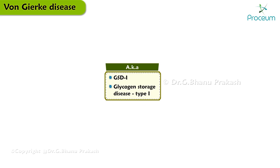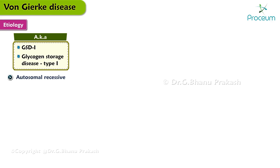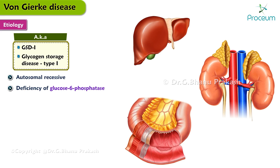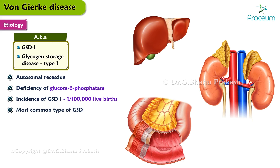Hello everyone, today we are going to be talking about Von Gierke disease, starting with the etiology. Von Gierke disease is an autosomal recessive disorder and occurs due to defective or a deficiency of an enzyme, glucose 6-phosphatase, in the liver, kidney, and intestinal mucosa. The incidence of GSD1, or glycogen storage disease 1, is 1 in 100,000 live births. It is one of the most common types of glycogen storage diseases.